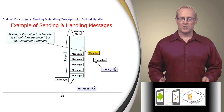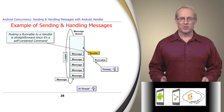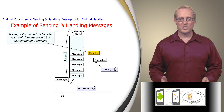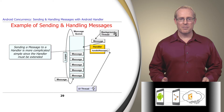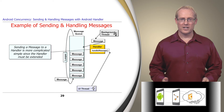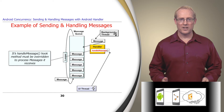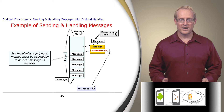Posting a runnable to a handler is straightforward, since the runnable defines a self-contained command whose logic is localized in its run hook method. Sending a message to a handler is a bit more complicated, however, since the handler must be extended and its handleMessage hook method overridden to process messages it receives.